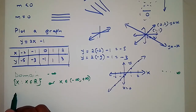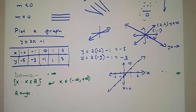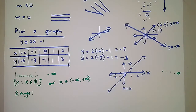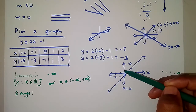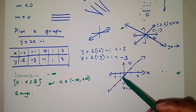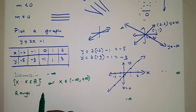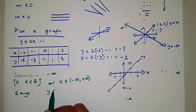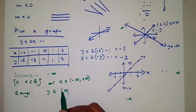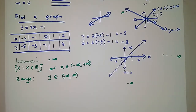Now for the range, we look at the y values. This graph extends from positive infinity down to negative infinity in the y direction as well. So for straight lines that are not restricted, y is also an element from negative infinity to positive infinity. That is the range of the function.